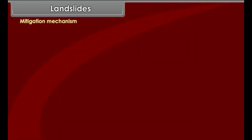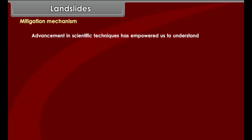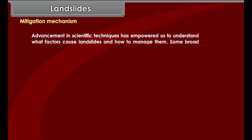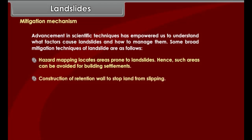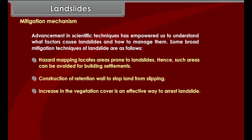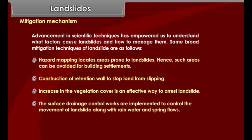Mitigation mechanisms for landslides include: hazard mapping, which locates areas prone to landslides so they can be avoided for building settlements; construction of retention walls to stop land from slipping; increasing vegetation cover as an effective way to arrest landslides; and surface drainage control works implemented to control the movement of landslide along with rainwater and spring flows.